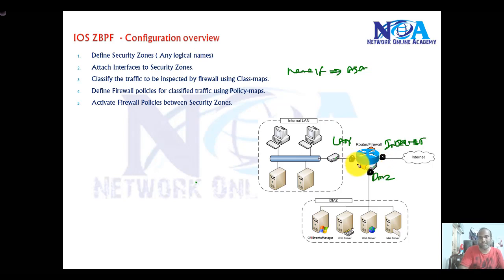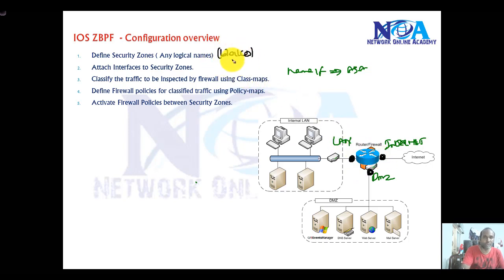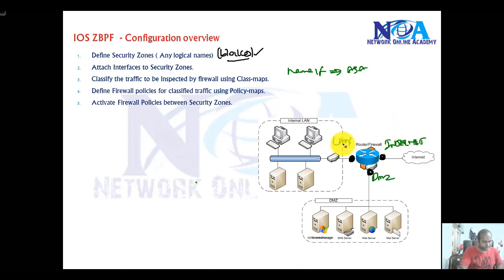Once we associate specific interfaces to the zones, by default the traffic between these zones is blocked. There are no higher or lower levels here. By default, all traffic between any zone to any zone — like going from LAN to Internet — will be denied. So the first step is to create the security zones and then assign them to the interfaces.